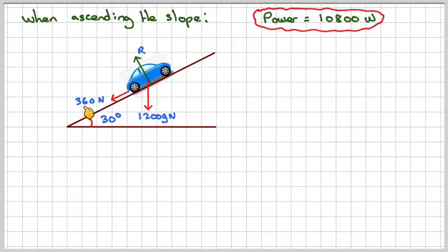We've got a resistance of 360 newtons, and then we've got this tractive force, which is P over V. The same P, but we've now got to find the new value of V that is moving up the slope, given that the maximum power the engine can get is that.